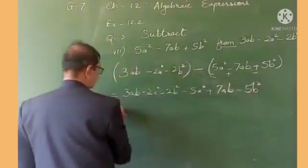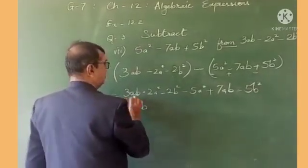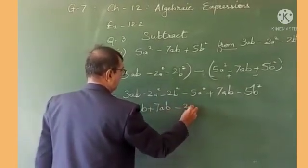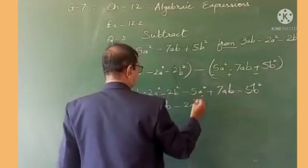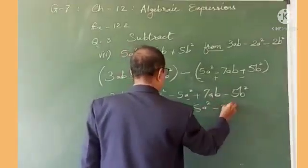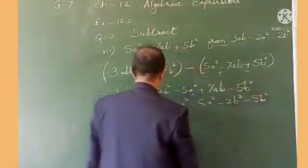The next step is to write the like terms together. So 3ab plus 7ab, we put them together. And similarly, we write the other like terms together.